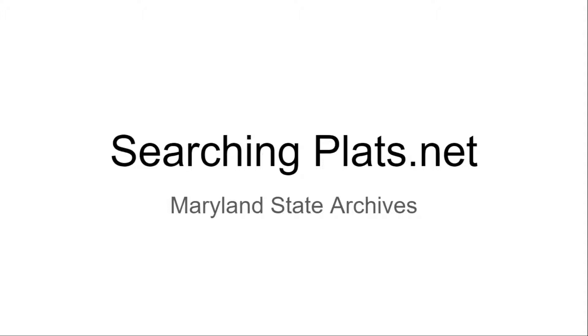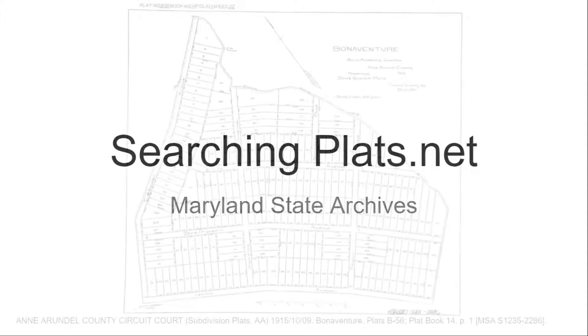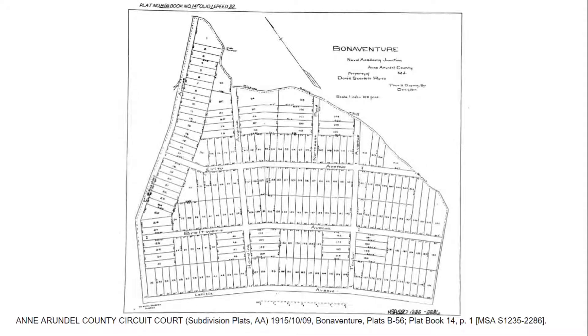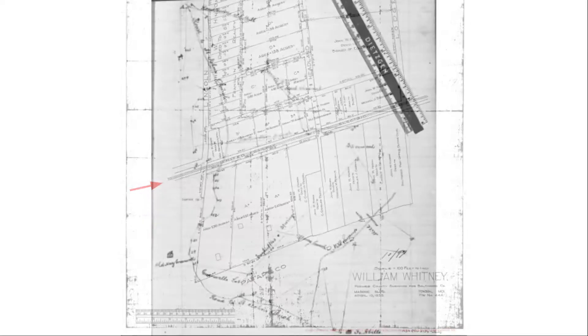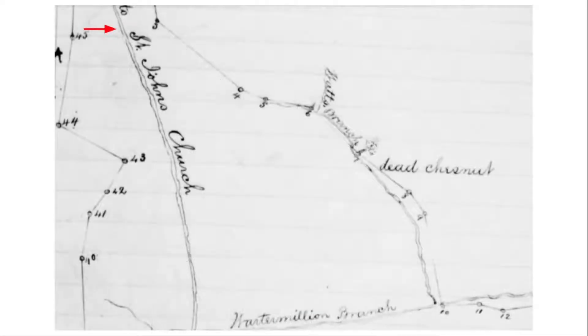Platts.net provides free online access to plats, which are maps relating to land ownership, showing the boundaries of properties described in deeds. Plats can show planned neighborhoods, farms, and more. Details on plats may include railroads, rivers, streams, bodies of water, or roads that can help place the modern location of land.